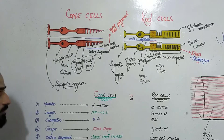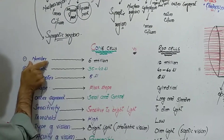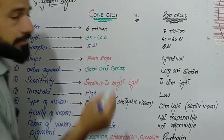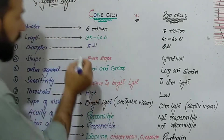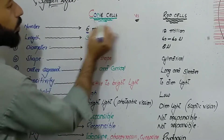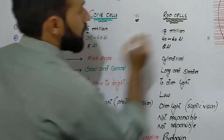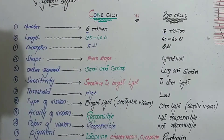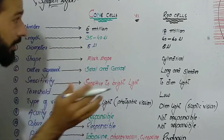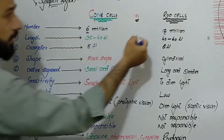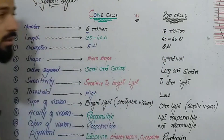The first difference between rod cells and cone cells is the difference in number. In our eye we have 6 million cone cells, but there are 12 million rod cells. So in both eyes we will have 12 million cone cells and 24 million rod cells.